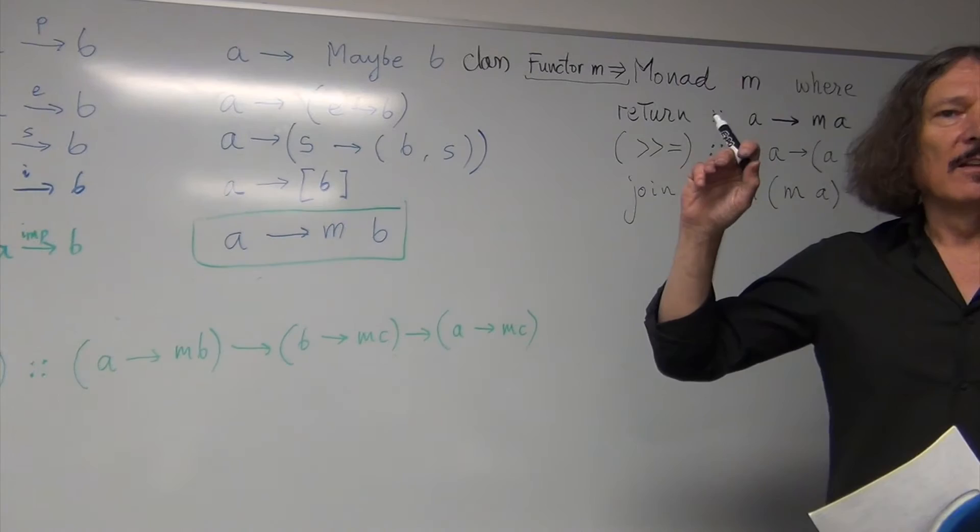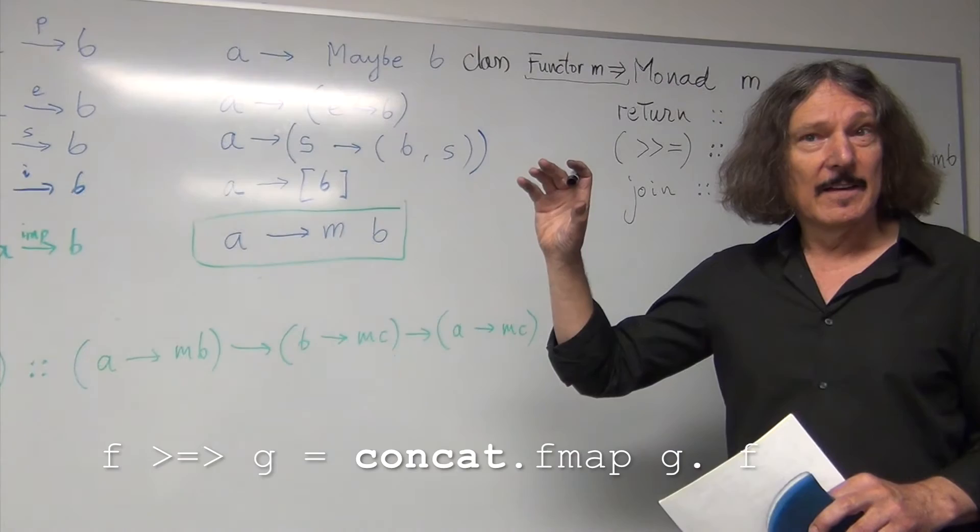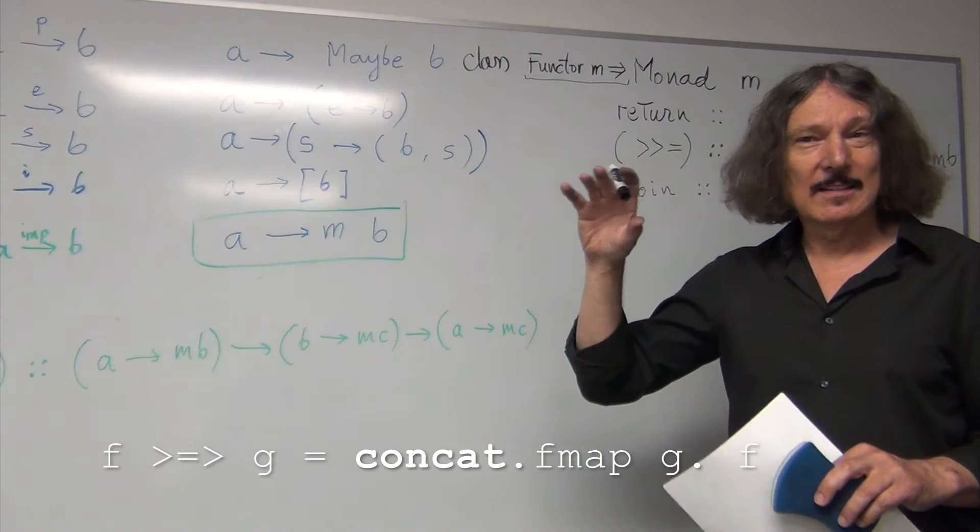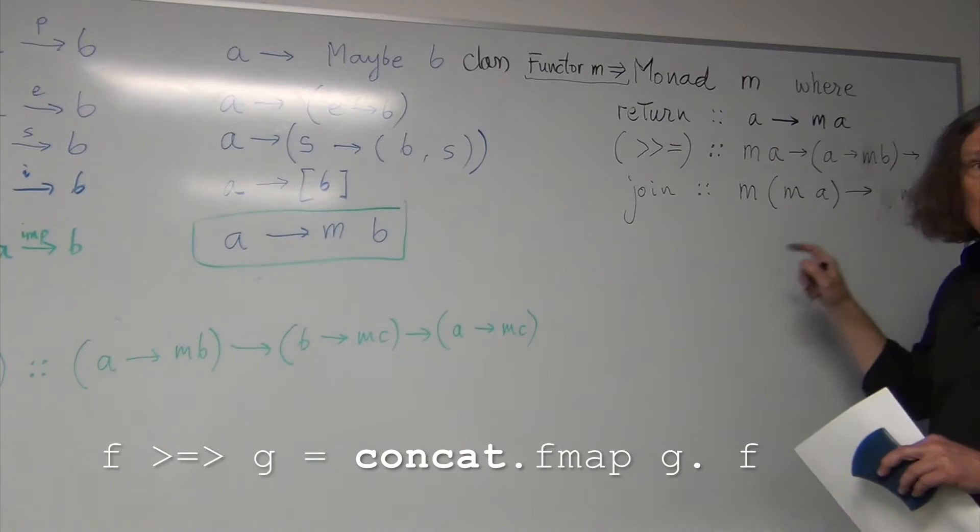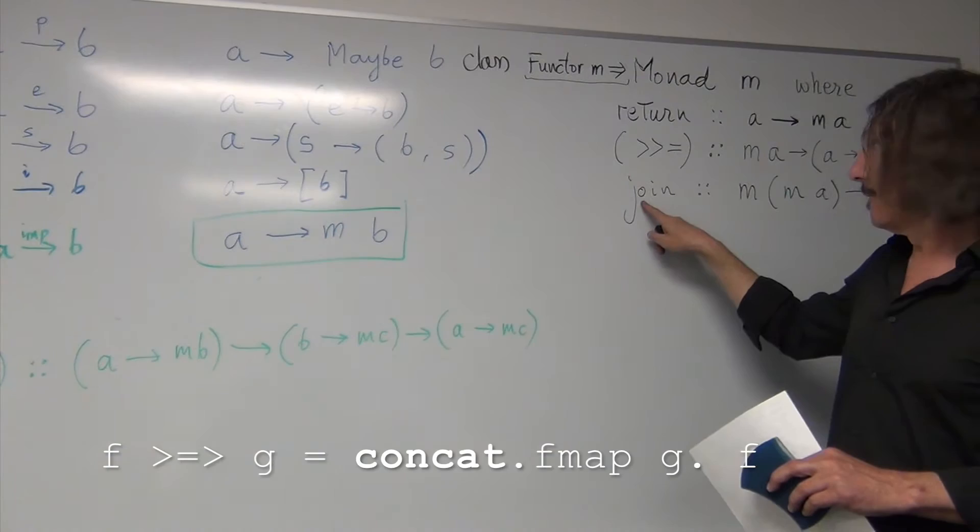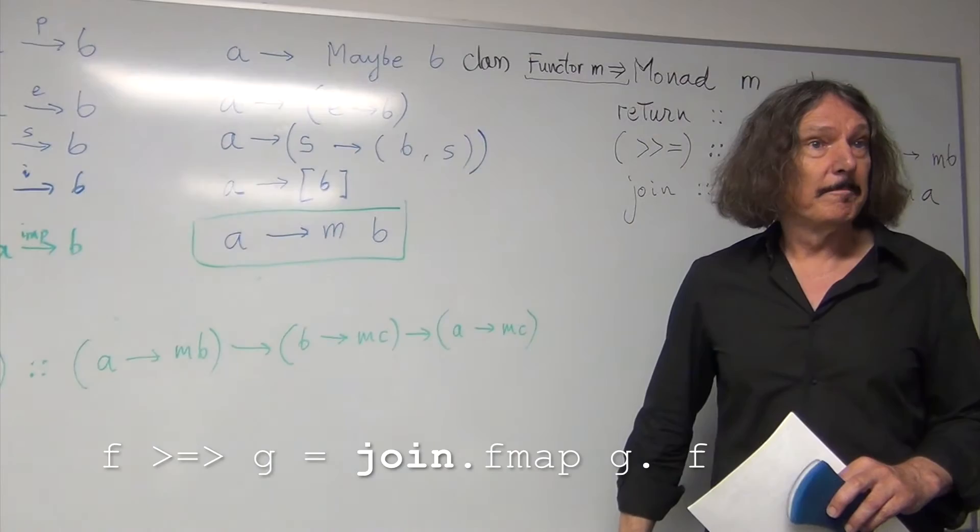But in general, you can define a function that looks similar. You remember it was double list, list of lists into a list. Now, replace list with m. And you get something that takes m of m of a and flattens it, produces ma.